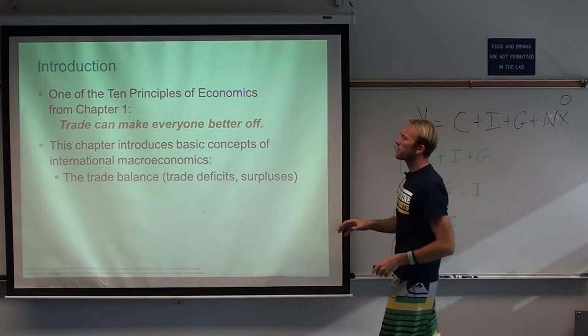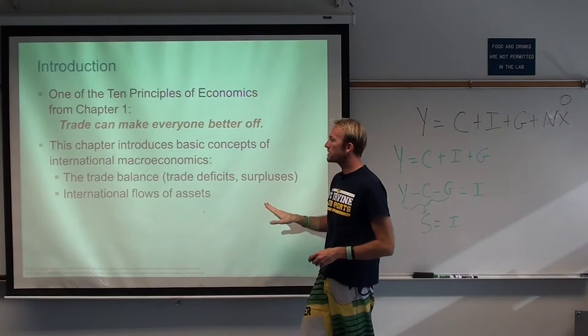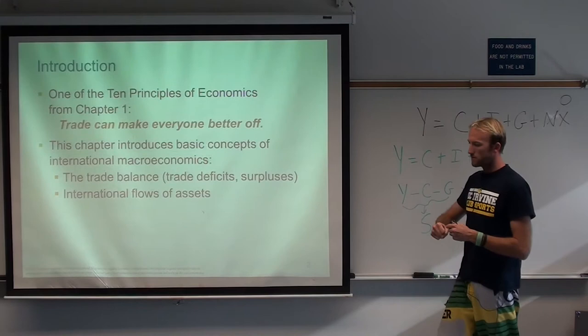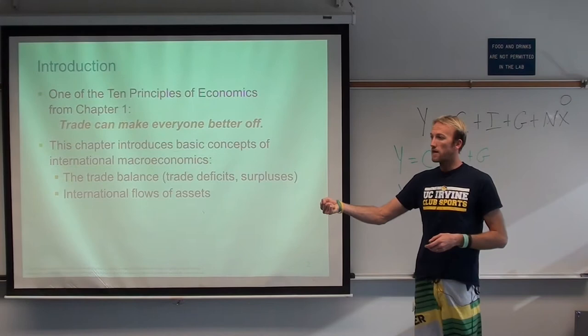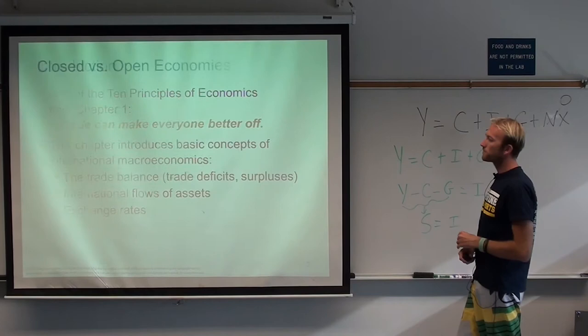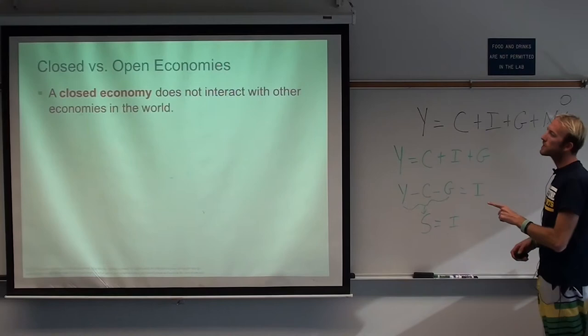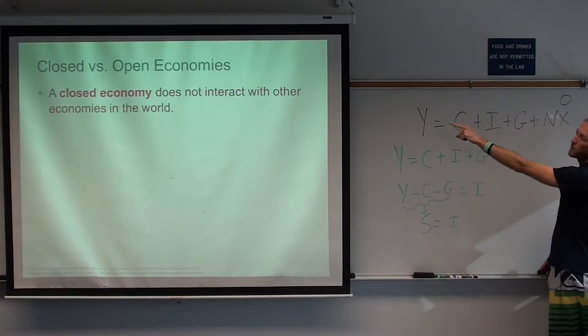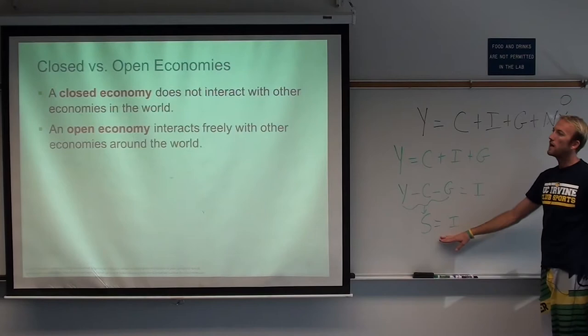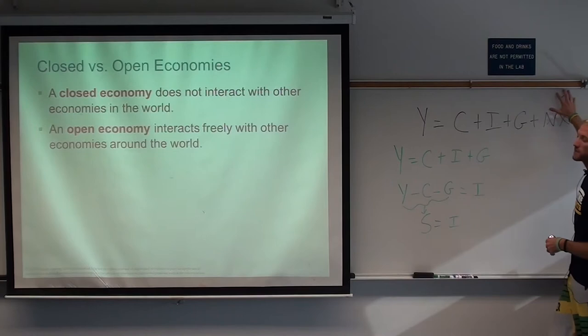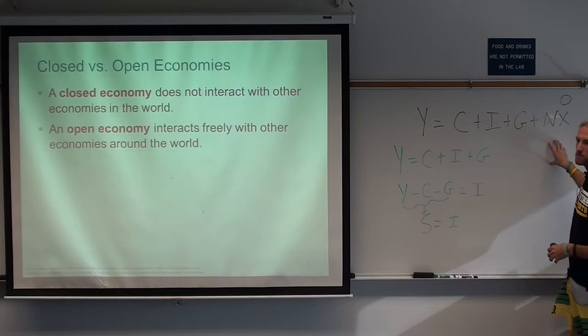We're going to talk about the trade balance — whether a country has a trade deficit or a trade surplus. We'll talk about international flows of assets, because money and assets have to travel to another country to pay for imports and exports. We'll also talk about exchange rates. Let's do a quick review: in a closed economy, net exports equals zero, and savings equals investment. In an open economy, we remove that assumption and allow countries to interact freely and trade.